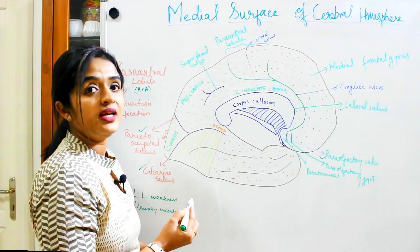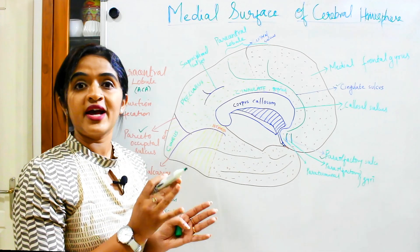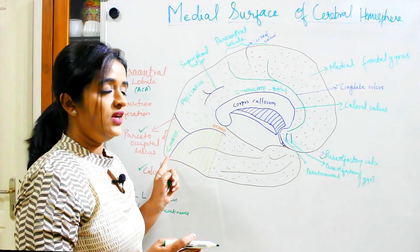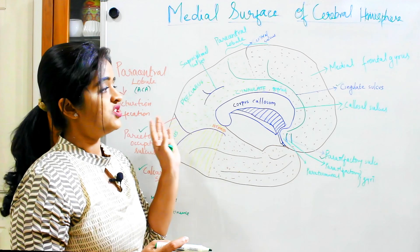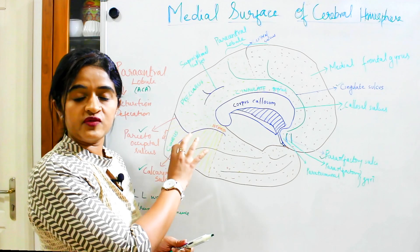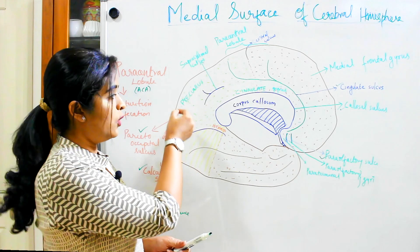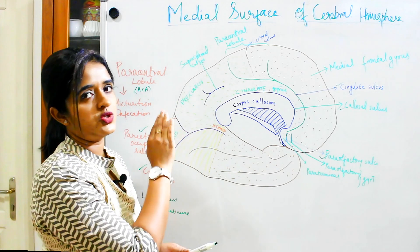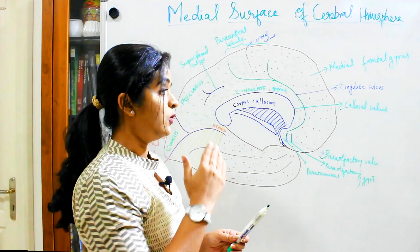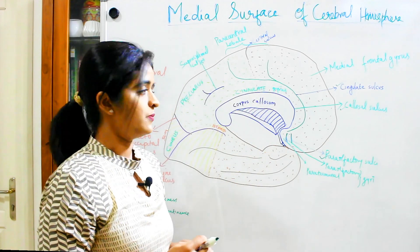Coming to the posterior aspect we have two important sulci: the parieto-occipital sulcus and the calcarine sulcus. When we discussed the sulci and gyri on the supralateral aspect, we saw the parieto-occipital sulcus and the calcarine sulcus projecting onto the supralateral surface, though the major portion of both sulci are viewed from the medial surface. A portion of each extends onto the supralateral surface as well.